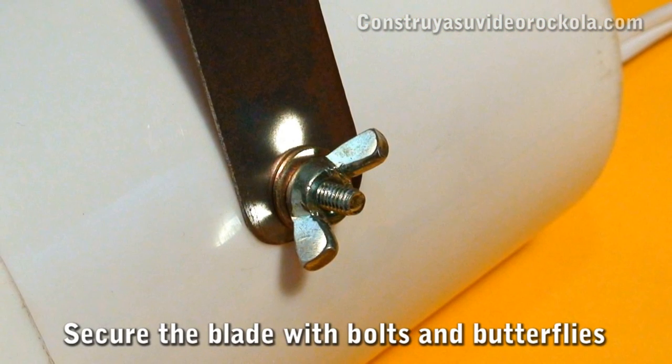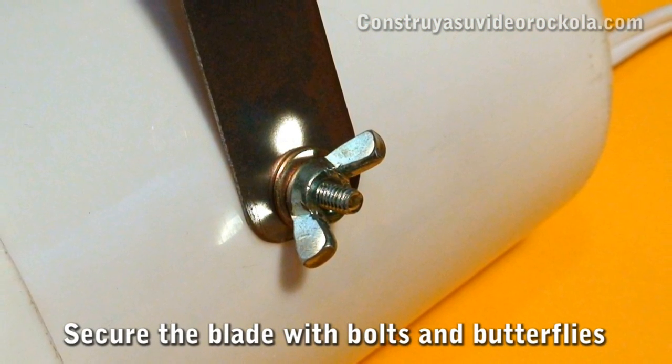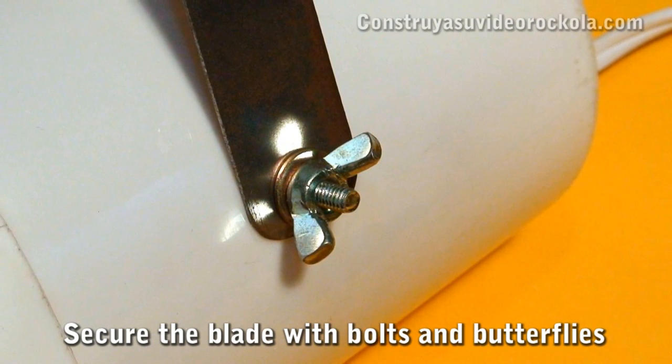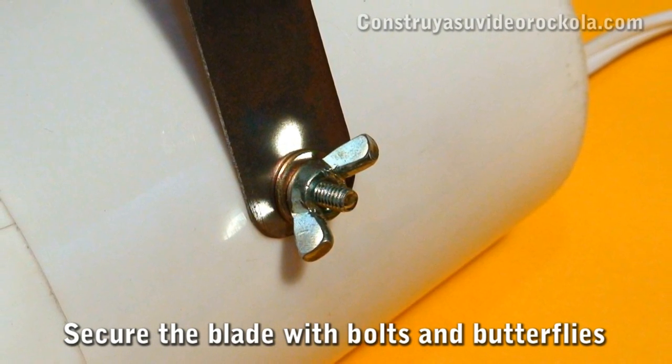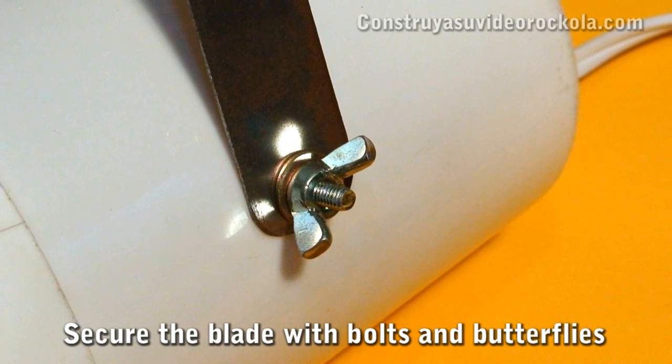We make a couple of holes on the sides of the bowl and put the screws, holding them with washers and leaving the wing nuts on the outside so you can adjust to your preference and change the angle of the strobe.